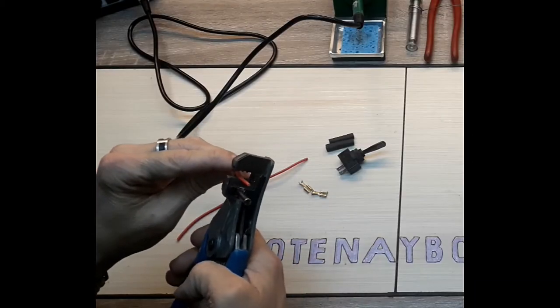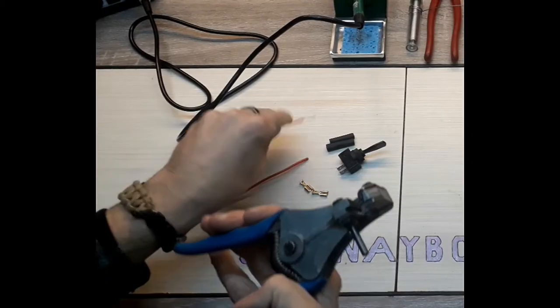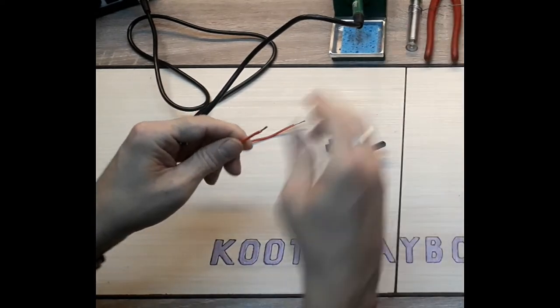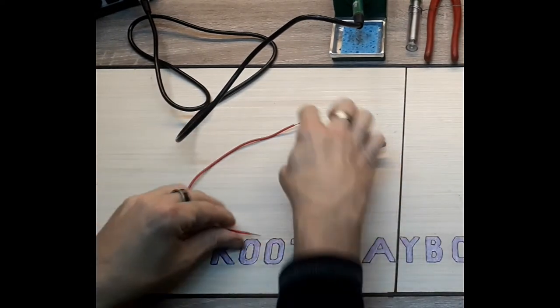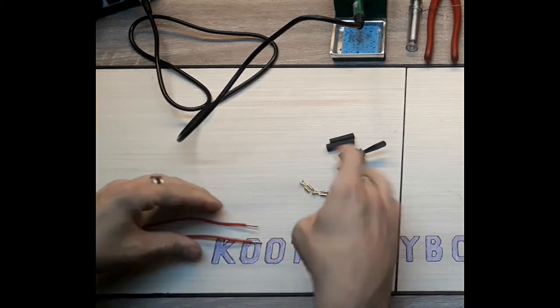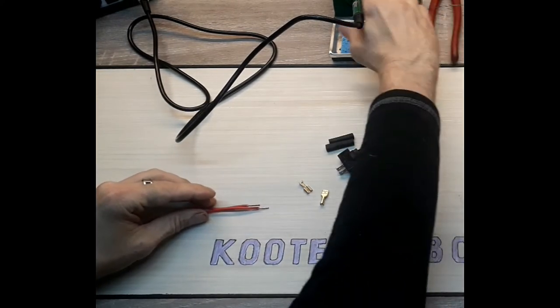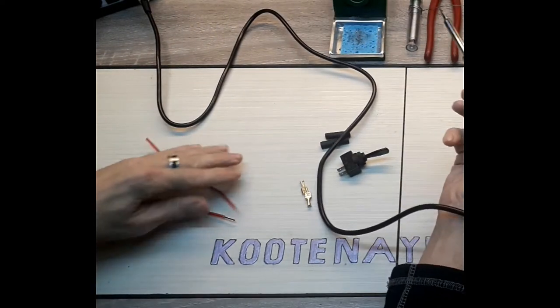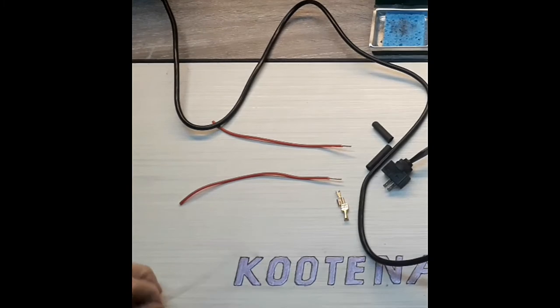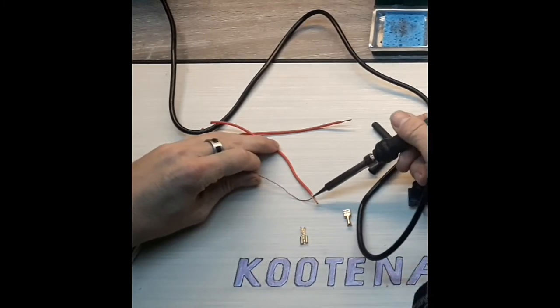First things first, you're going to want to tin your wires. That includes stripping a little bit of the insulation off the end. As I've said before, you don't really need much wire bare. You only want as much as you need to go into the clips; anything else is waste. So we'll start by tinning the ends of these wires.